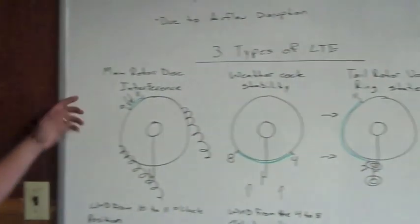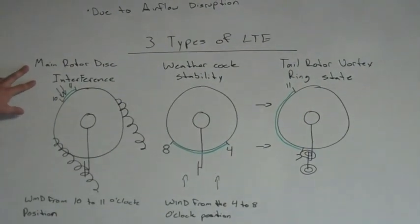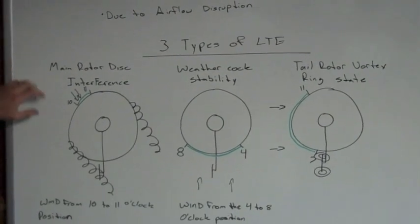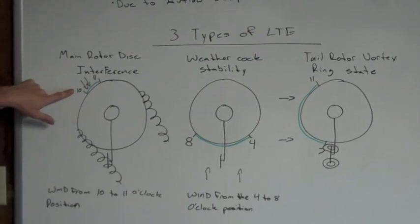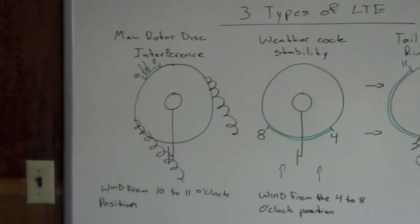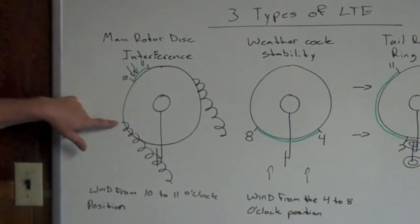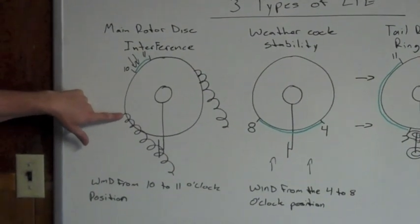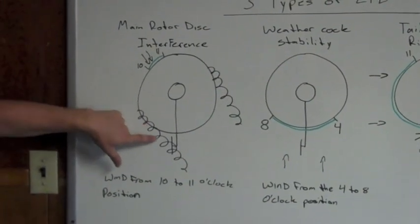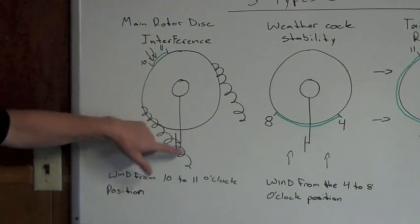Now there's three different types of LTE. The first one is called Main Rotor Disc Interference. It occurs when the wind is coming at the helicopter from the 10 and 11 o'clock position. What happens is the vortices from the main rotor blade's tips get blown into the tail rotor, thereby disturbing the airflow.